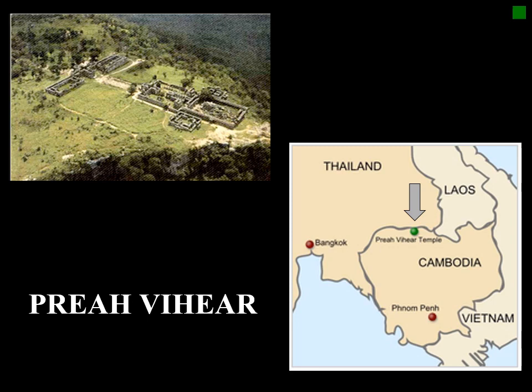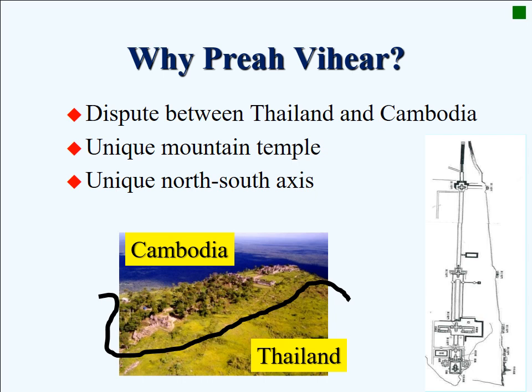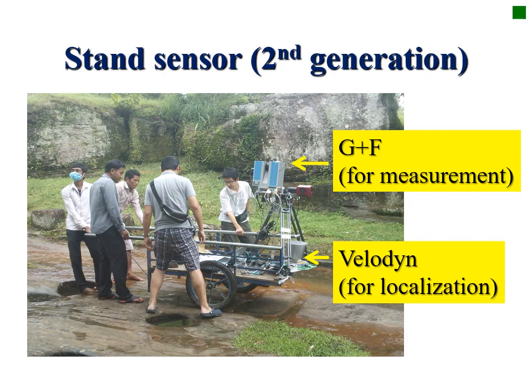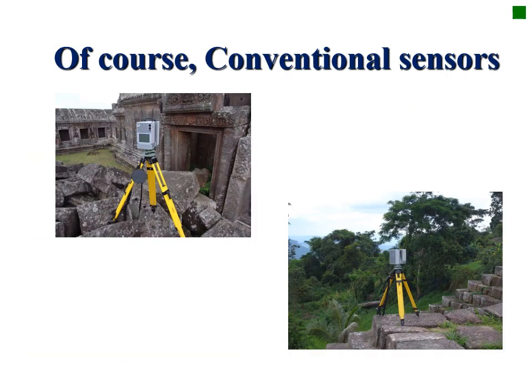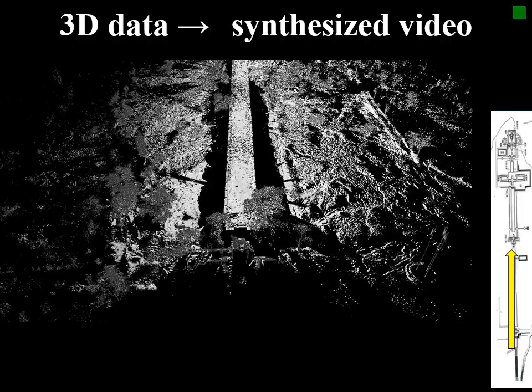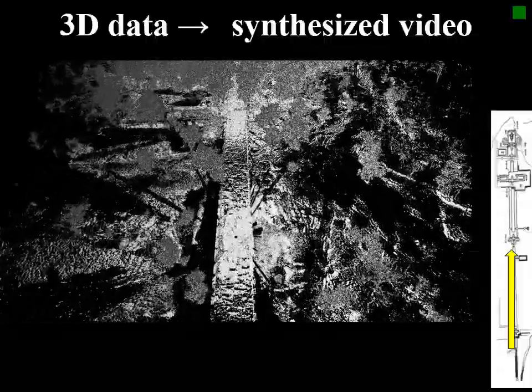The next target was Priyabihya Temple, located on the international borderline between Thailand and Cambodia. The main reason why we digitize Priyabihya Temple is due to the dispute on the ownership of the temple, which often occurs between the two countries. It is also notable that this temple's main access is along the north-south line, while the main access of usual Angkor temples is along the east-west line. Since temple buildings are distributed over wide areas, we designed a mobile sensor platform, and we also use conventional sensors to digitize remaining areas. This is a video created from the obtained range data.